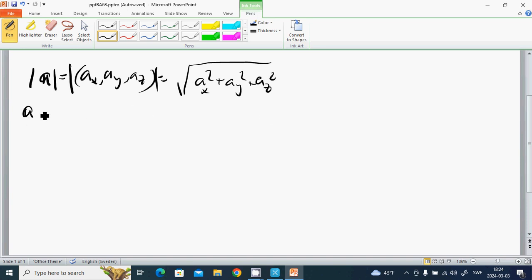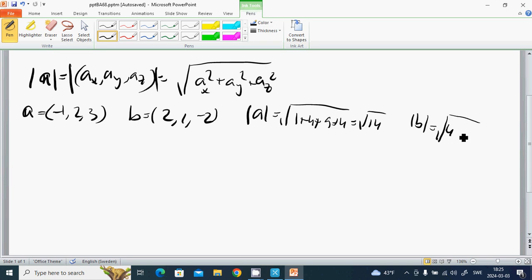Example: a equals (-1, 2, 3), b equals (2, 1, -2). Then |a| equals √(1 + 4 + 9) = √14. And |b| equals √(4 + 1 + 4) = 3.